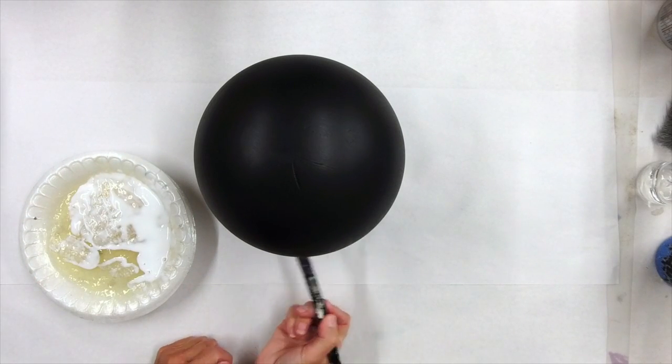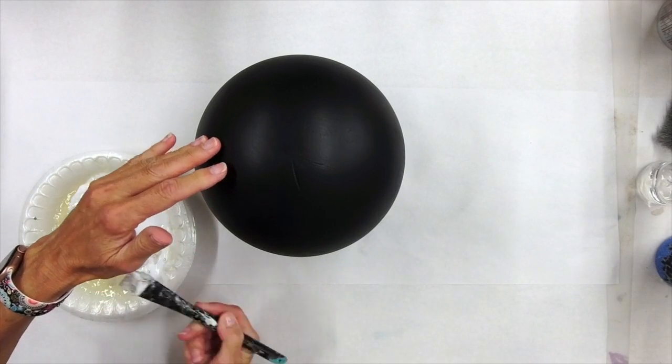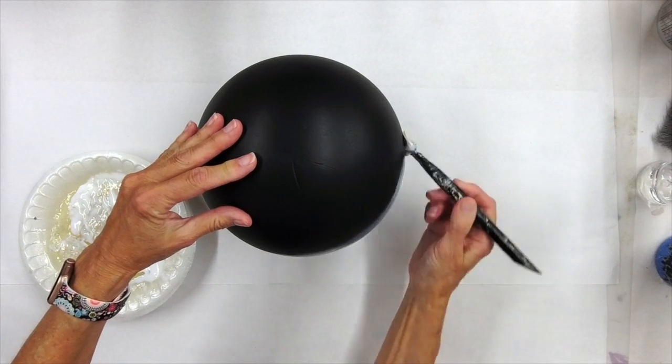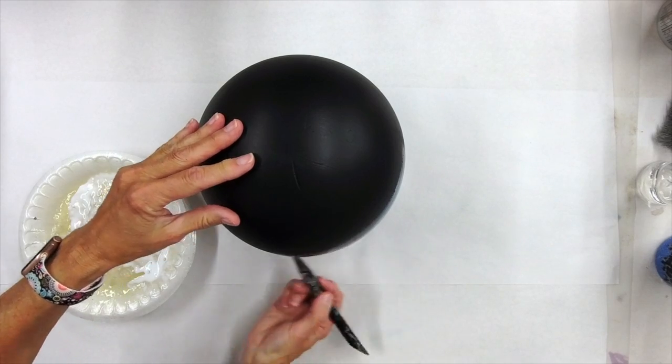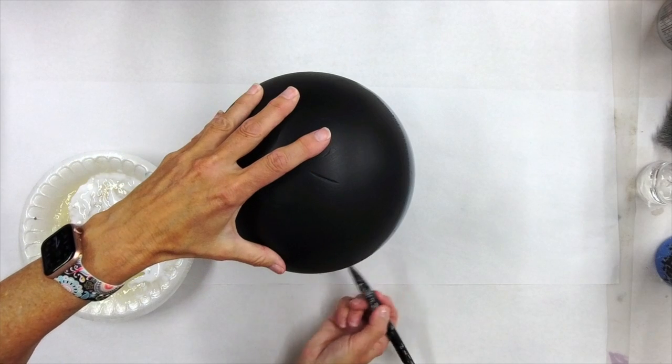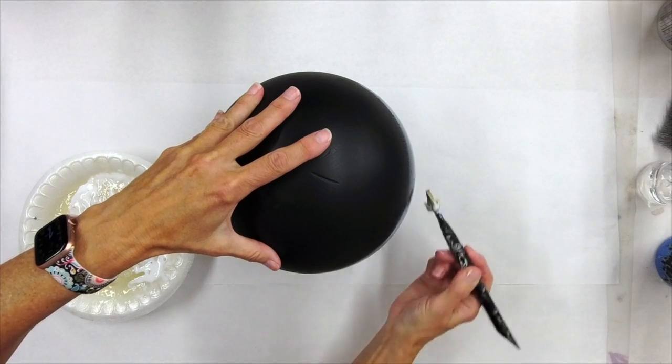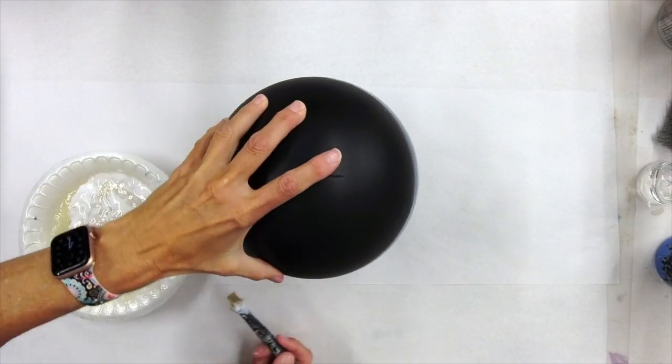So a little bit more about the foil adhesive. As you can see, it does go on milky white looking. And the darker your surface is, the more you'll actually see that. And it dries to that nice, clear, shiny finish. So it dries completely clear.